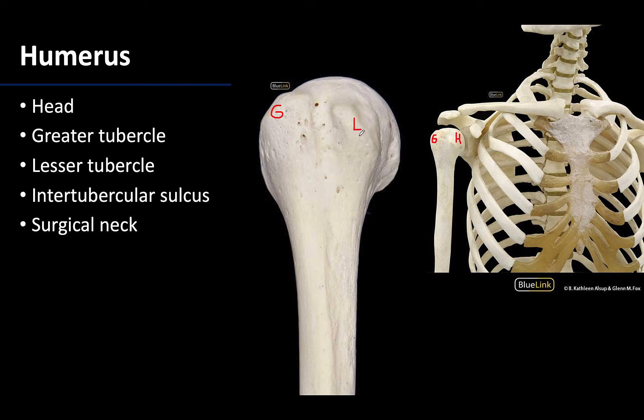More anteriorly placed is the lesser tubercle, which is smaller because only one of the rotator cuff muscles attaches here.